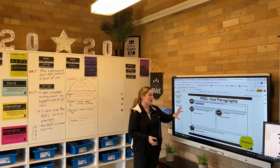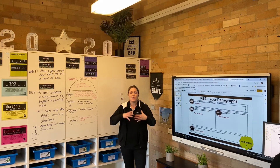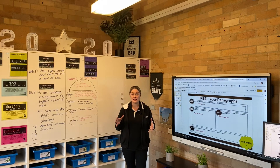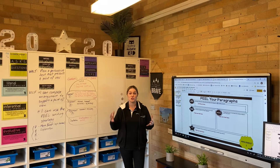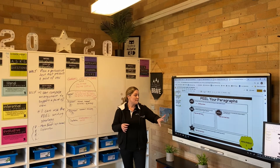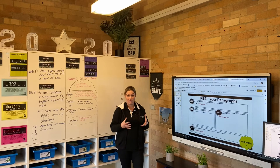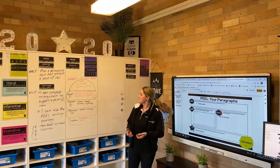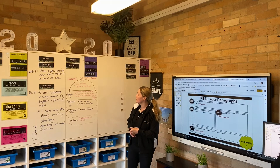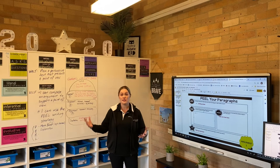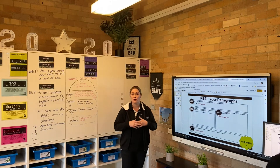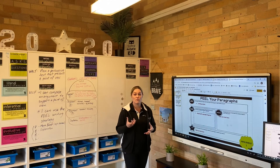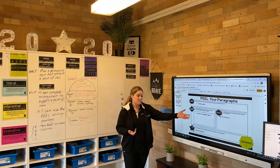Moving on to our explanation and our evidence — this is where we elaborate. The first point, the P, is really just one sentence that introduces your reader to what you're going to talk about in that paragraph. But here is where the meaty part of the paragraph happens. We're going to explain what we're talking about, so we might say: by limiting our contact with other people, we're stopping the spread of germs — we're not touching each other, we're not hugging. Then we want to find some really robust evidence to help back up what we're saying.